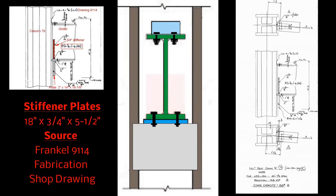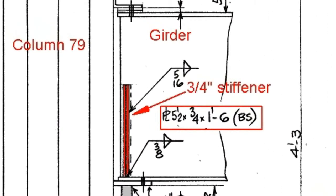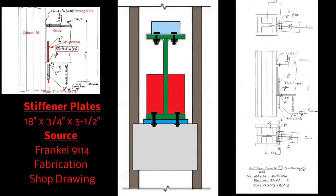So let's take a look at the elements that made up this connection. First of all there are the stiffener plates. You can see there are two, one either side of the girder. When you look at how they're connected, they're welded at the bottom and the sides by 3/8ths and 5/16th welds. They're called out as PL, they're 5 1/2 by 3/4 by 1 foot 6 and the BS means that they're on both sides. You can see them in Frankel 9114 fabrication shop drawing.